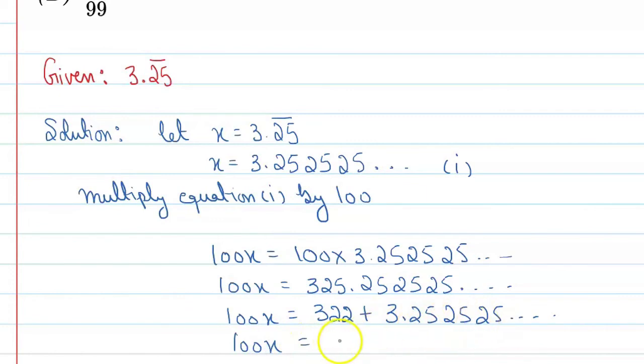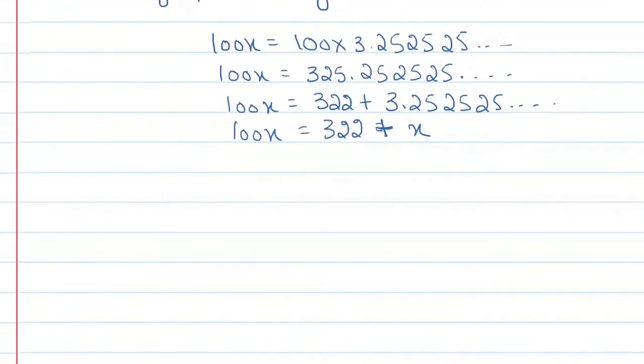Now you know in equation 1 we let this part as x. So we can say 322 plus x, isn't it? The calculation is very simple. Now we just need to find the value of x. We can write 100x minus x equal to 322. So this is 99x equal to 322.